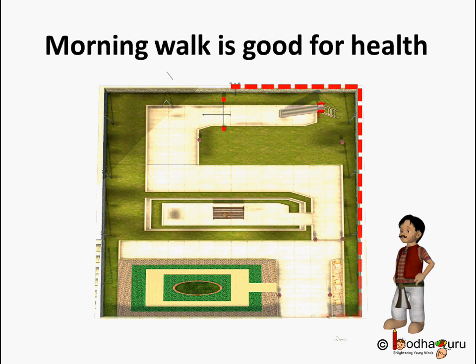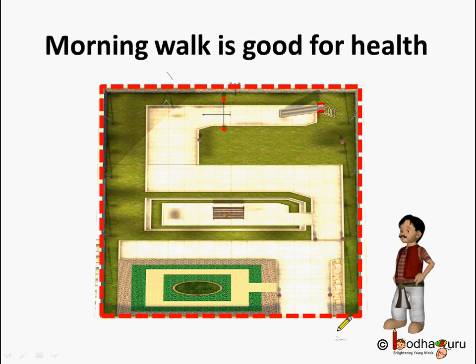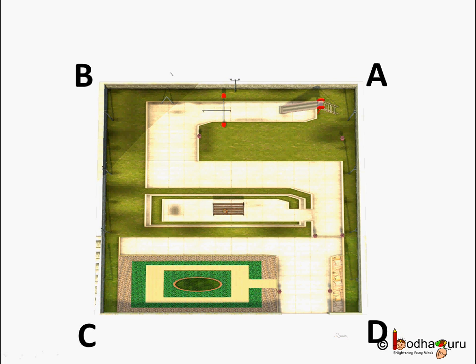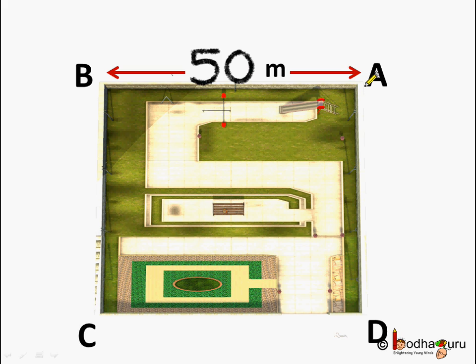One round means he travelled the total distance shown by the red dotted lines. Now suppose we know the lengths of the sides of this garden — then how much distance did Manat Ram travel? He travelled starting from A to B, and covered a distance of 50 meters.